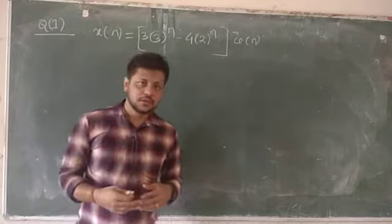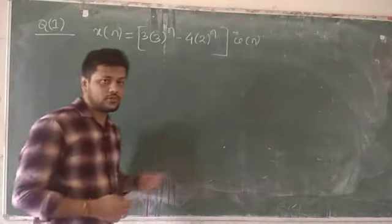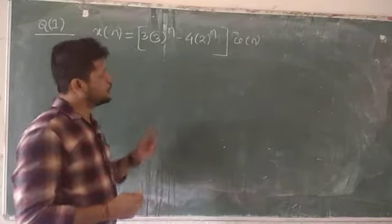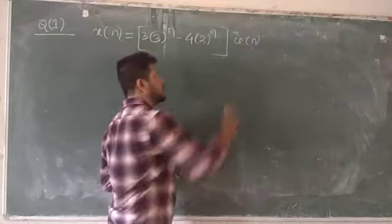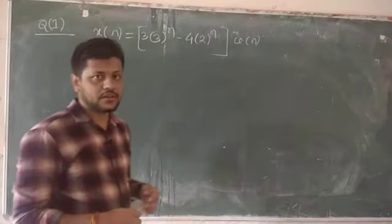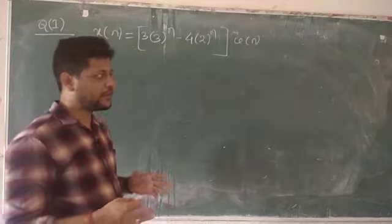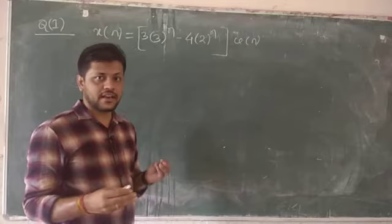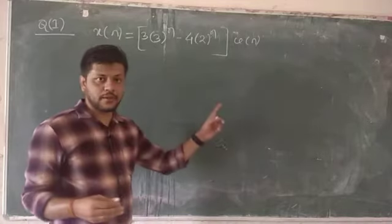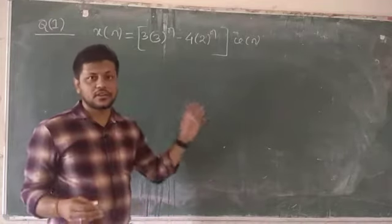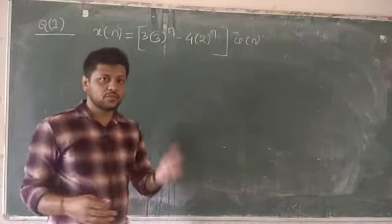The first example: xn = (3·3^n − 4·2^n)·u(n). The moment you see u(n), this is a causal signal. A causal signal exists only for positive values of time, meaning u(n) = 0 for negative n. So for positive n, including 0, from 0 to infinity, this expression exists.